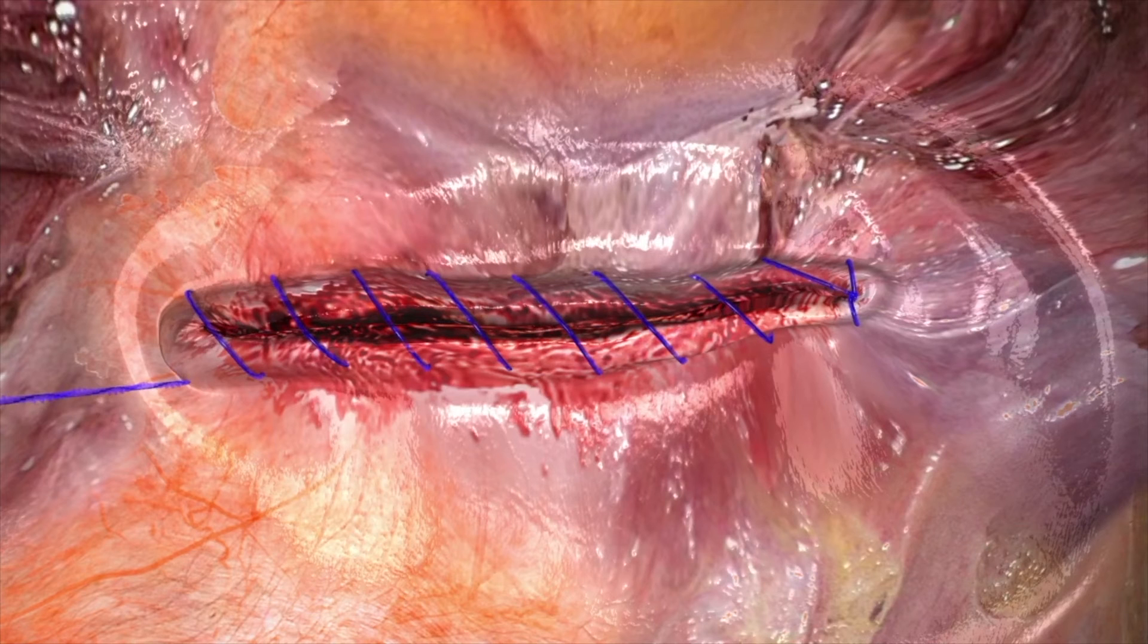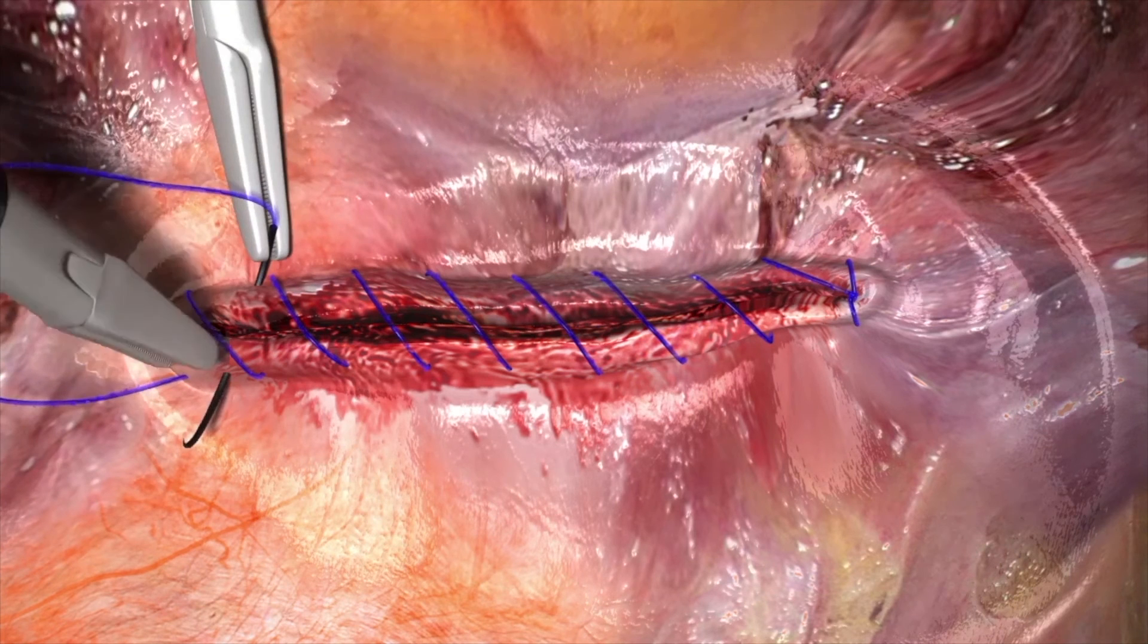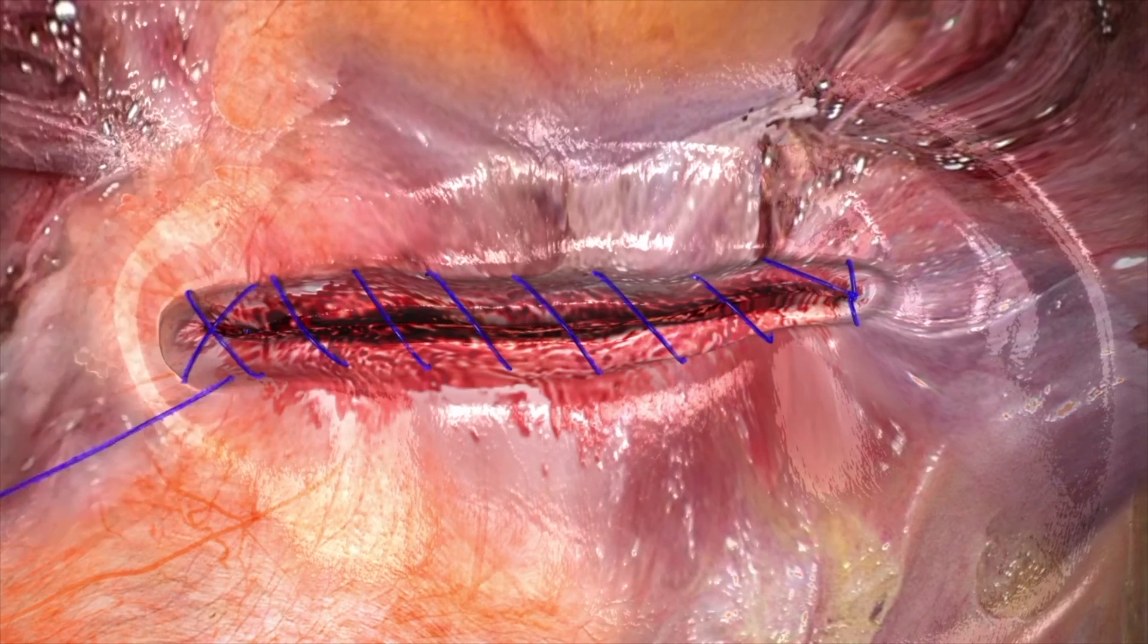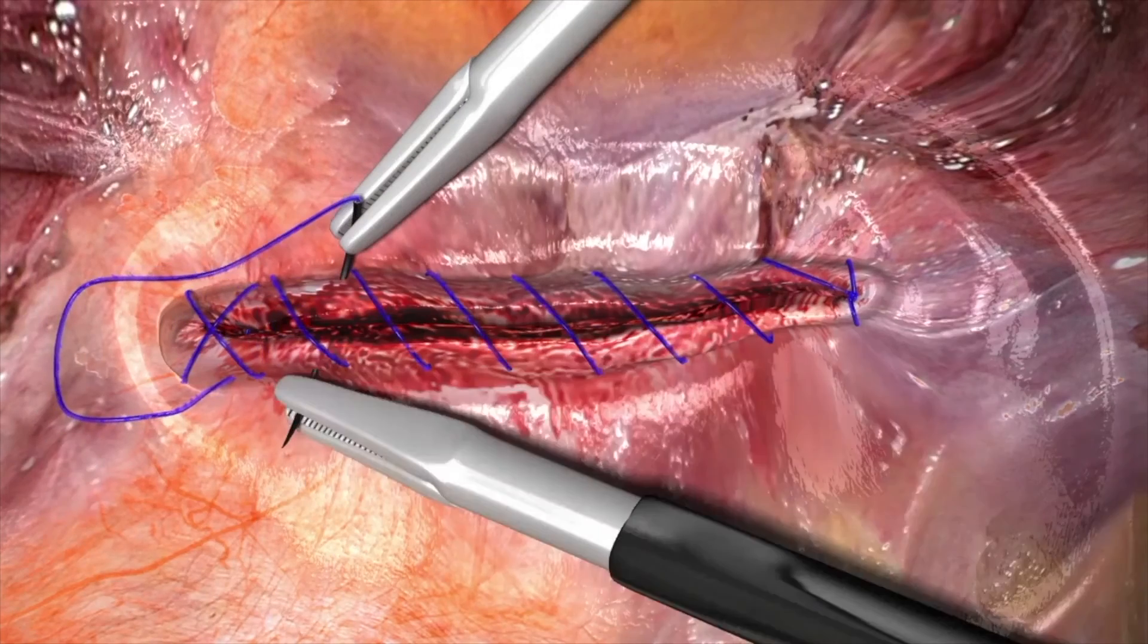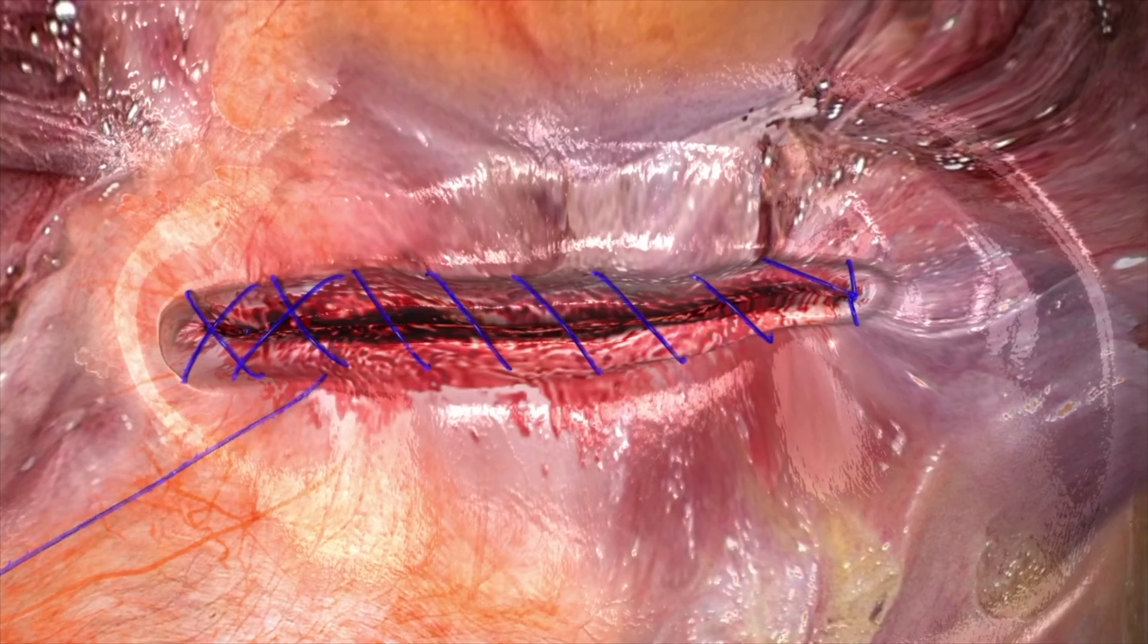Retain approximately three inches, or eight centimeters, of the device for completing the closure and locking down the Stratafix Spiral Devices. To complete the closure, take at least two passes in the reverse direction. This eliminates the need for intracorporeal knot tying. Gently pull on the free end of the device and cut flush with the surface of the tissue. The remaining device and needle are removed.